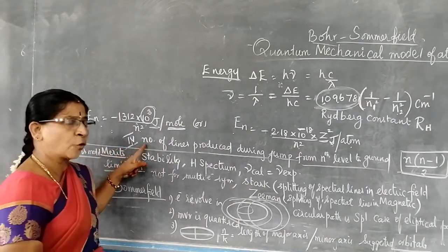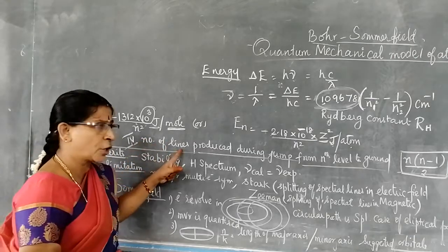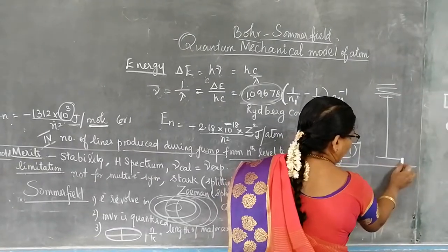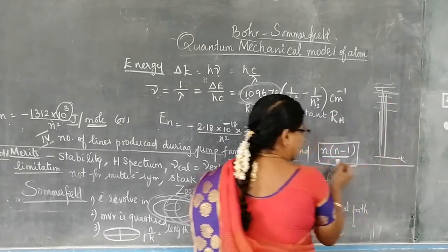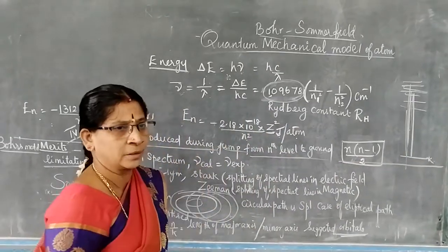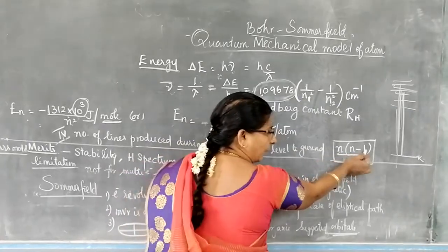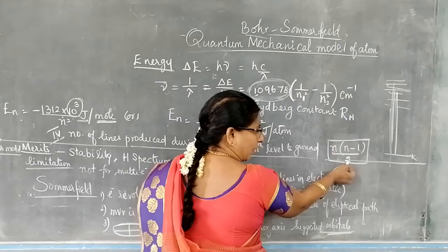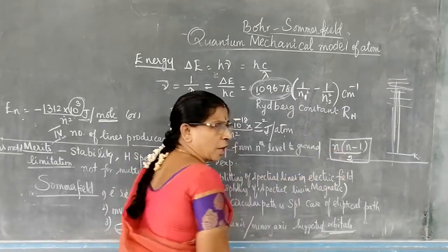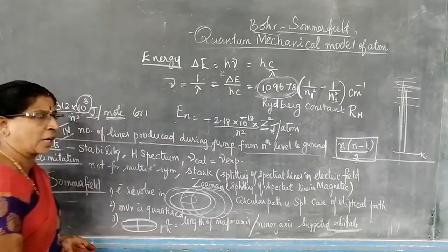Now we come to the fourth point: calculating the number of spectral lines produced during a jump from the nth level to the ground level. The formula is n(n−1)/2. If an electron is jumping from the fifth orbit, the number of spectral lines is 5 × 4 / 2 = 10 spectral lines. For the sixth orbit: 6 × 5 / 2 = 15 spectral lines.